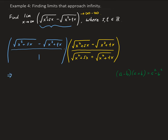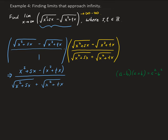So we're going to end up getting x squared plus sx, minus x squared plus tx, all divided by the square root of x squared plus sx plus the square root of x squared plus tx. Simplifying this, we get x squared plus sx minus x squared minus tx, all divided by the square root of x squared plus sx plus the square root of x squared plus tx.